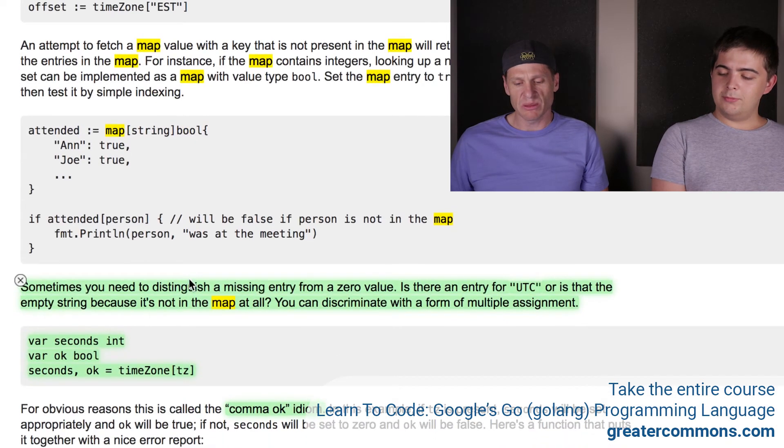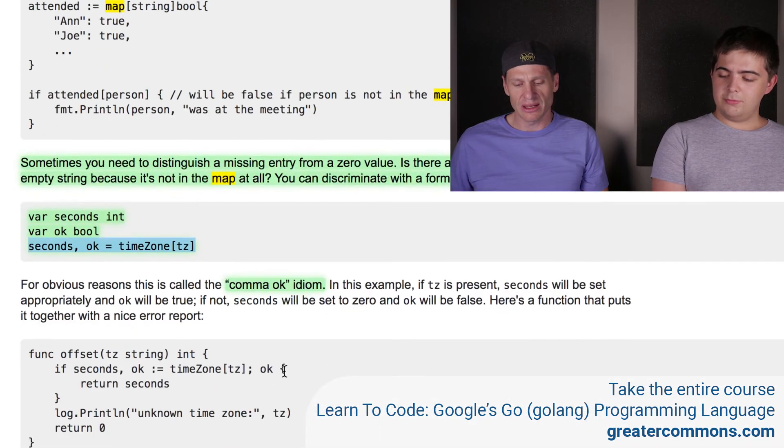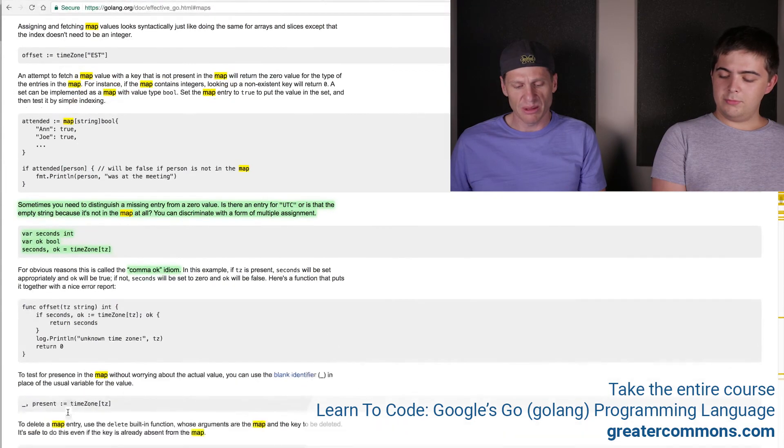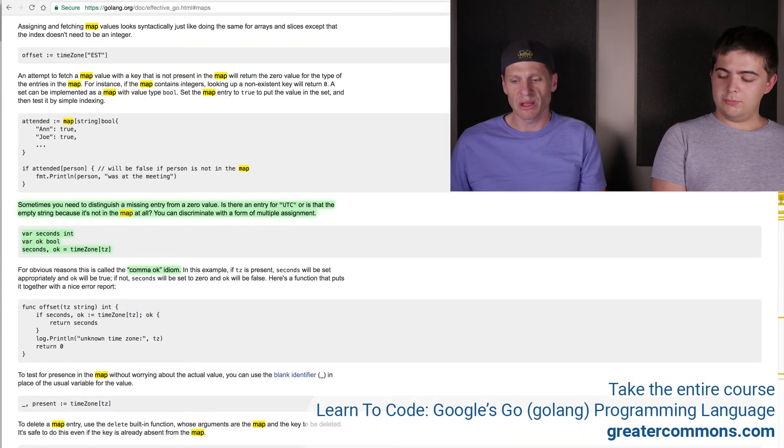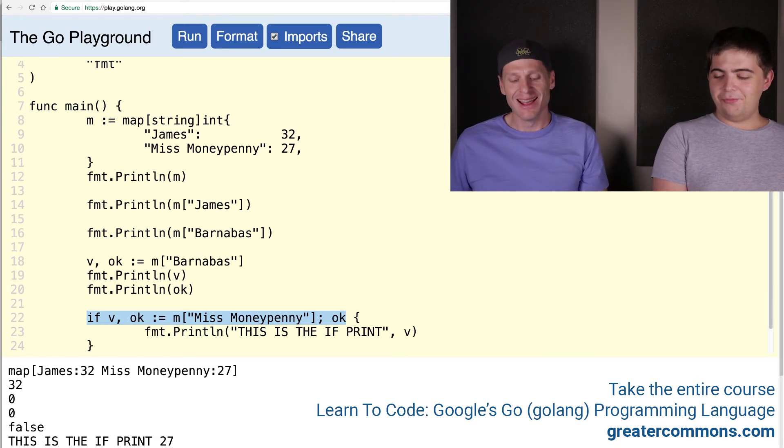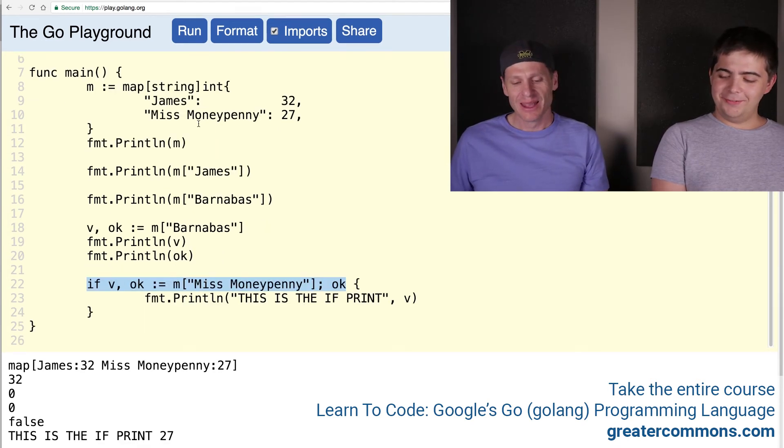Maps can be constructed using the usual composite literal syntax, which we've covered. Sometimes you need to distinguish a missing entry from a zero value, so you use this deal here, the comma okay idiom. And there it is all being explained on one line. Though I think my code examples are a little bit more clear than some of the code examples in effective Go and the language spec. Like some of those code examples, not only are they trying to show you how this one thing works, but then you have to figure out all the time zones to figure out the example. It's like, man, I just want to learn one thing at a time. So that's maps.